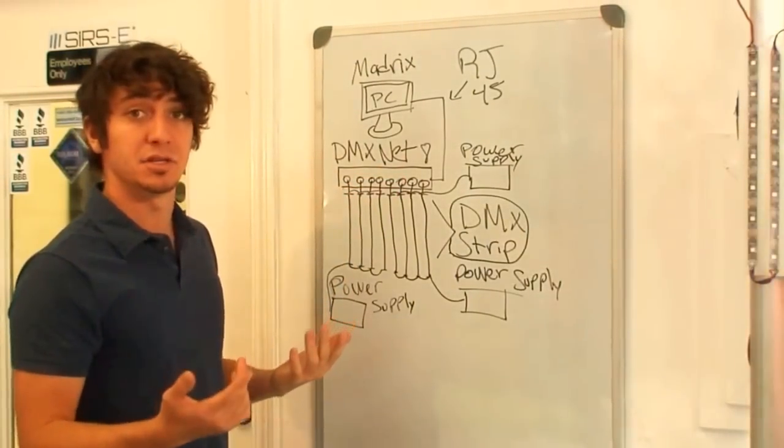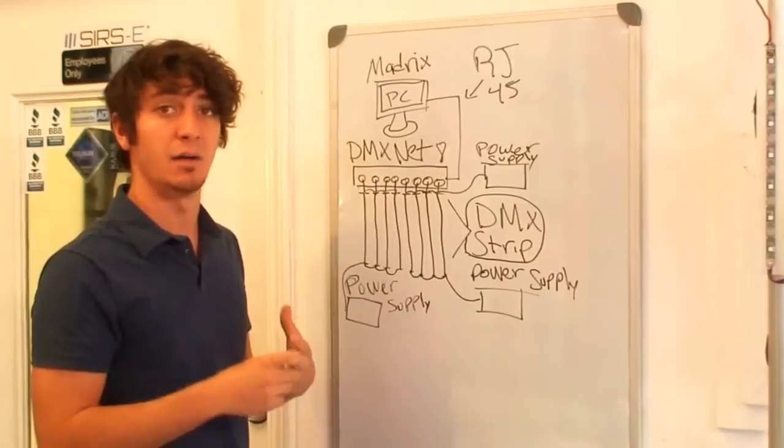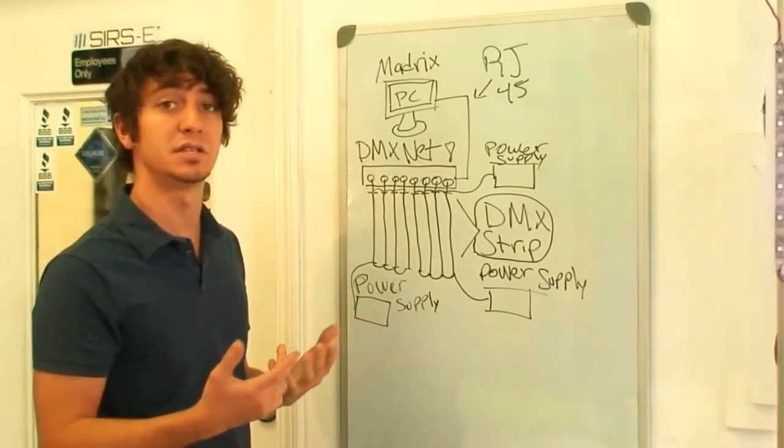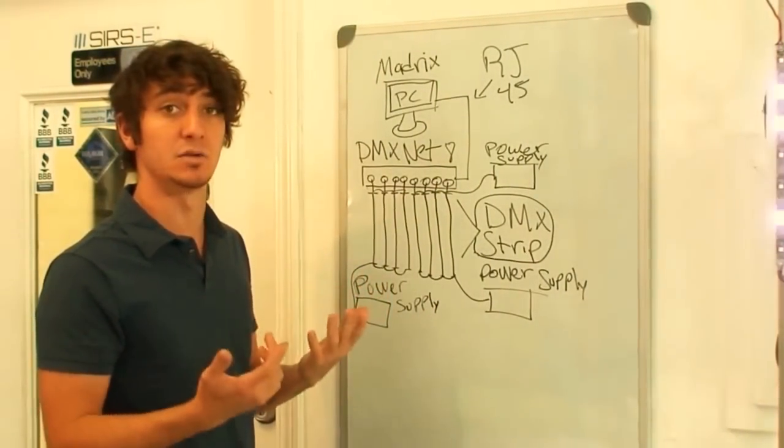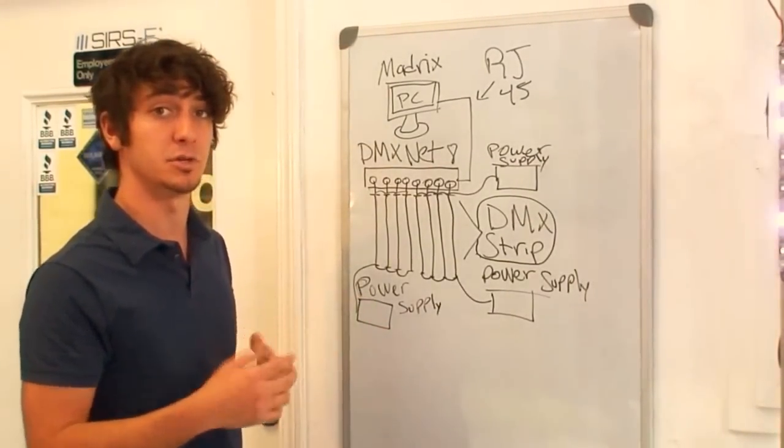You are going to need either the Madrix basic key, the pro key or the ultimate key, depending on how many pixels you are going to be using. Keep in mind it is 260 channels per strip. So you are going to have to figure out depending on how many strips you are going to use.